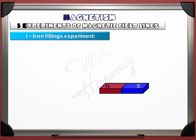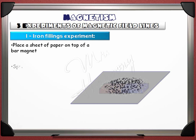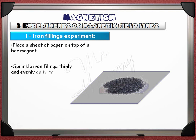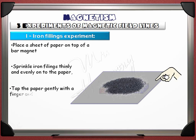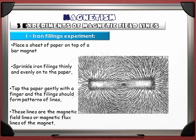The most common experiment to plot the shape of the magnetic field lines is the iron filings method. Place a sheet of paper on top of a bar magnet. Sprinkle iron filings thinly and evenly on the paper, then tap the paper gently. The filings form patterns of lines — these are the magnetic field lines, or magnetic flux lines, of the magnet. The iron filings align themselves along the magnetic field lines.